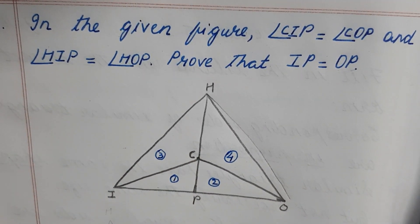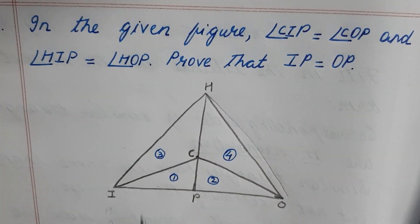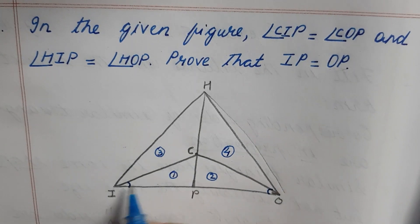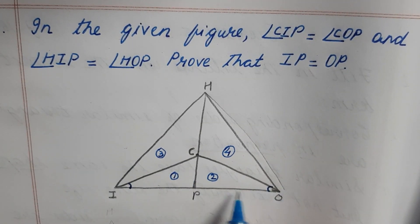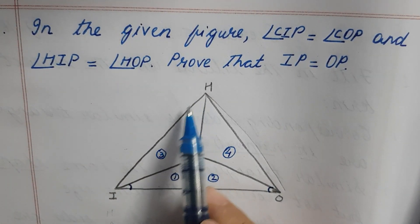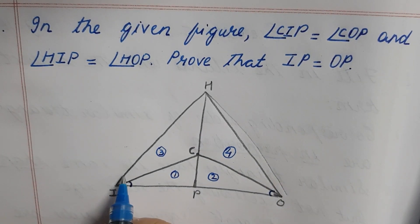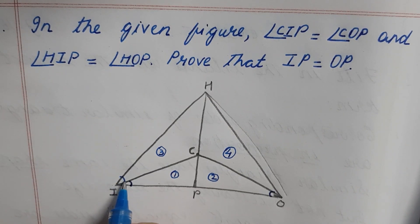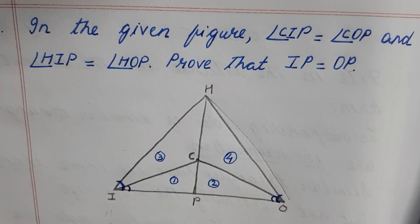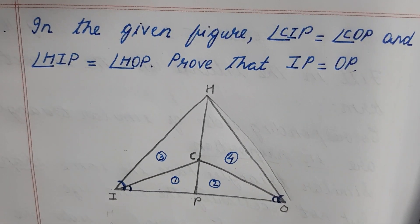First, we look at angle CIP is equal to angle COP. This angle is I and this angle is O. So angle CIP is equal to angle COP, and they have also given that angle HIP is equal to angle HOP. So this total angle is again equal to this total angle. It will help prove that IP is equal to OP. Let's proceed with the sum.